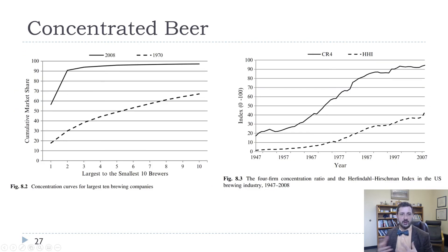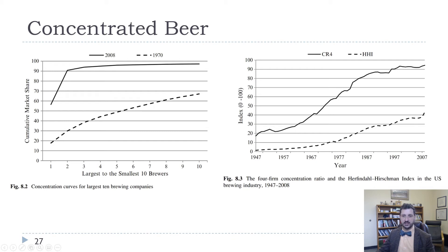Let's look at beer as an example. Looking at the concentration curve, the dotted line is the concentration curve in 1970 and the solid line is the concentration curve in 2008 — you can see it has shifted up dramatically, with the CR4 increasing dramatically since 1947. The CR4 is well above 90% in 2008.